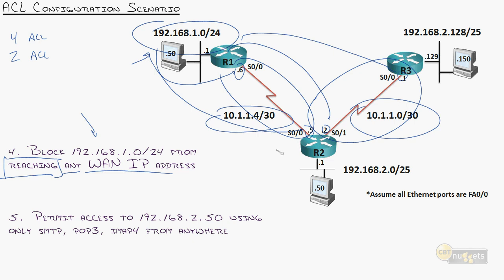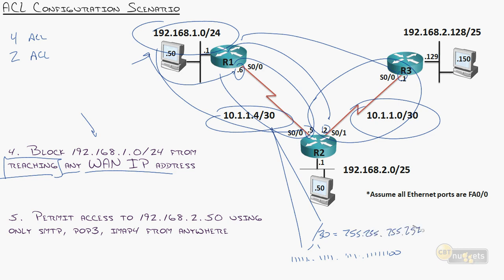The /30 subnet mask is 255.255.255.252 — six ones and two zeros in the last octet, giving an increment of four. The ranges are 10.1.1.0, .4, .8, and so on — typical WAN link ranges. For the wildcard mask, 255.255.255.255 minus 255.255.255.252 equals 0.0.0.3. So our wildcard mask for these /30 WAN links is 0.0.0.3.